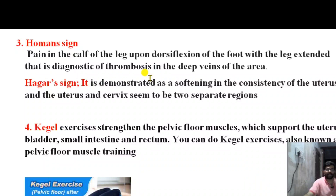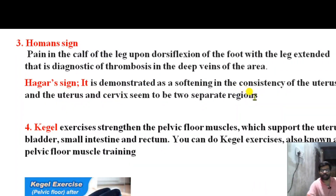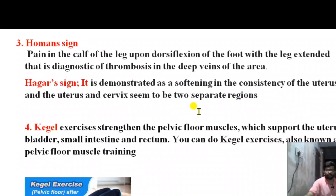A positive Homans' sign indicates deep vein thrombosis. Homans' sign is demonstrated as pain in the calf upon dorsiflexion of the foot. Hegar's sign refers to softening in the consistency of the uterus or cervix — these are two separate signs.